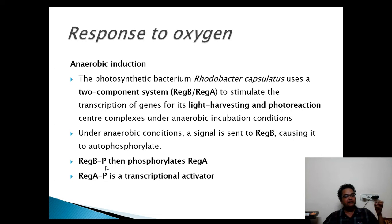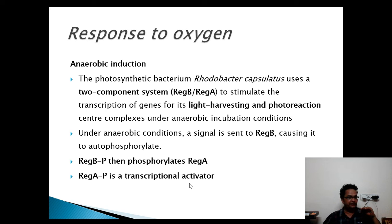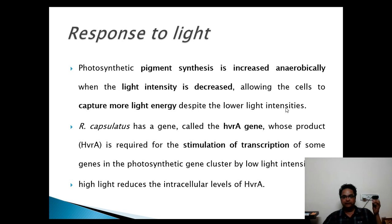This phosphorylated RegB then transfers the phosphate to RegA, and as a result RegA gets phosphorylated. RegA is a response regulator protein. The phosphorylated RegA protein then transfers the signal to the transcriptional activator of the photosynthetic pigment, resulting in synthesis of the light harvesting pigment and the reaction center pigment.